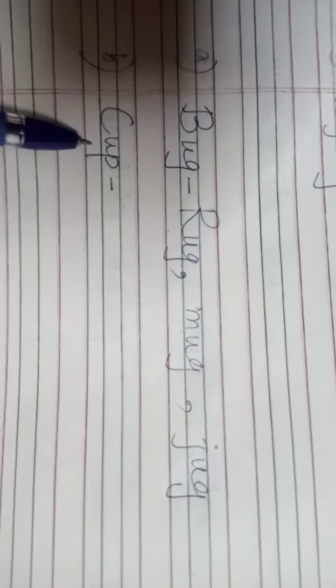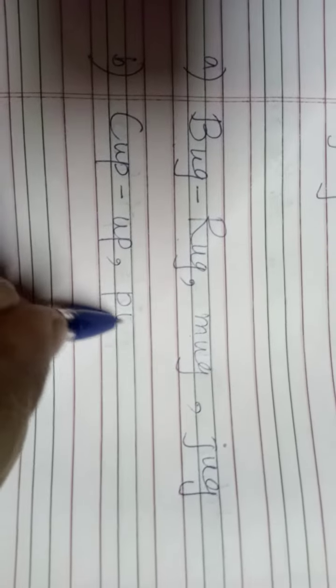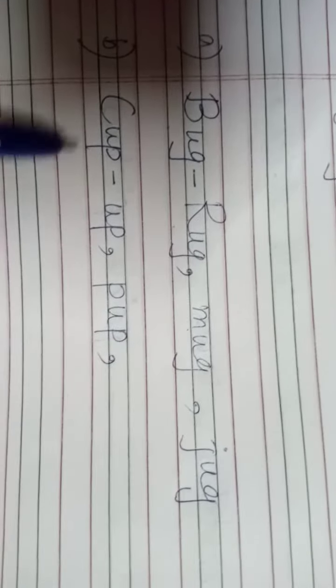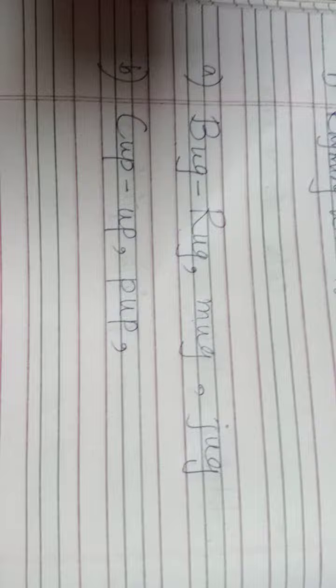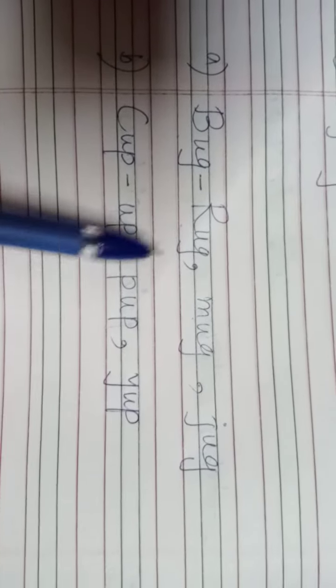Next one is cup C-U-P cup, U-P up, cup up, pop P-U-P up, okay? What are the rhyming words of cup? Cup, up, pop, or yup Y-U-P. Yeah, okay, you have to write three rhyming words, one, two, three.